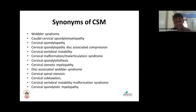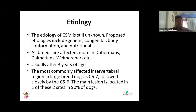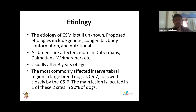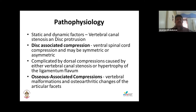The etiology of cervical spondylomyelopathy is still unknown but may involve genetic factors, congenital malformations, body conformation, or nutrition. It is most common in Dobermans, Dalmatians, and Vizslas, typically after three years of age. The most commonly affected intervertebral region is C6-C7, followed by C5-C6; 90% of dogs will have a lesion in one of these two regions.